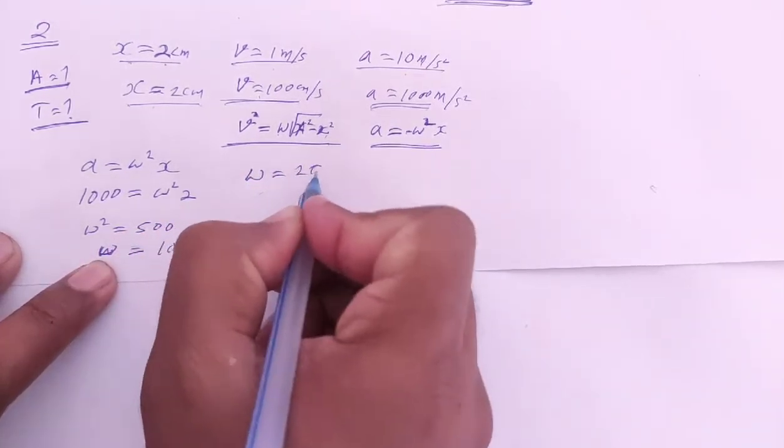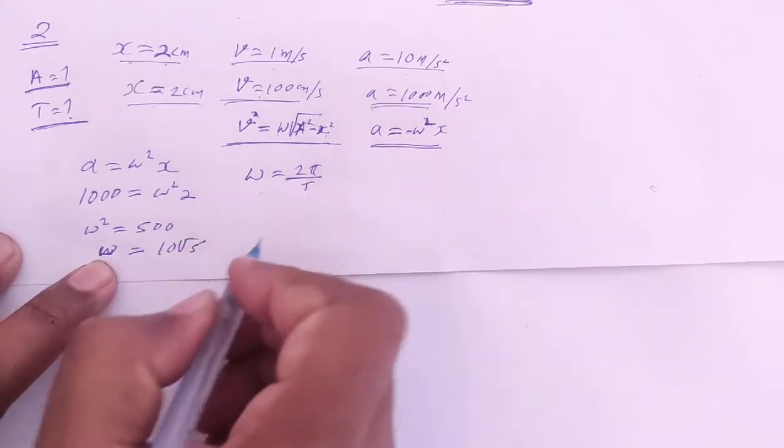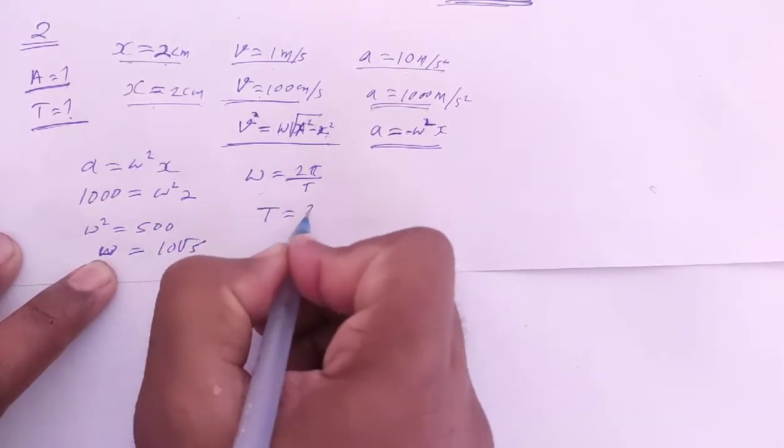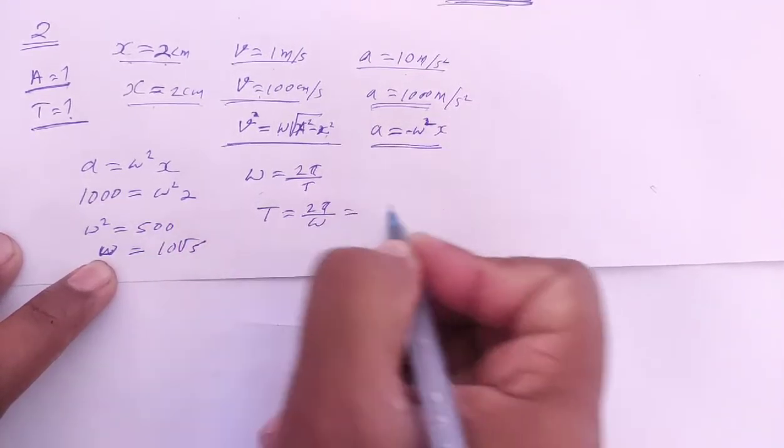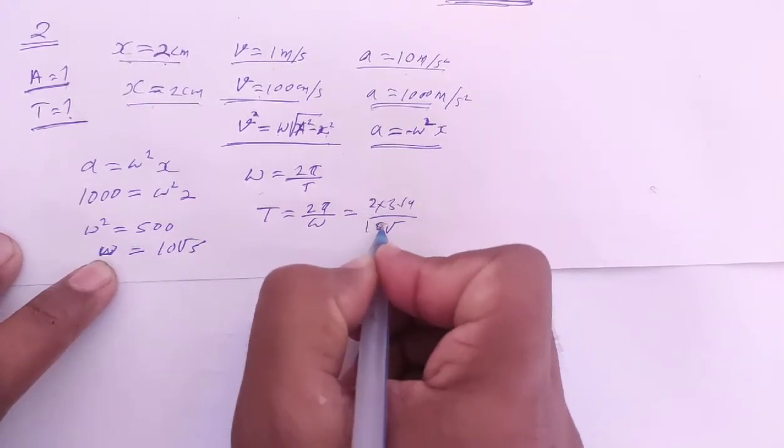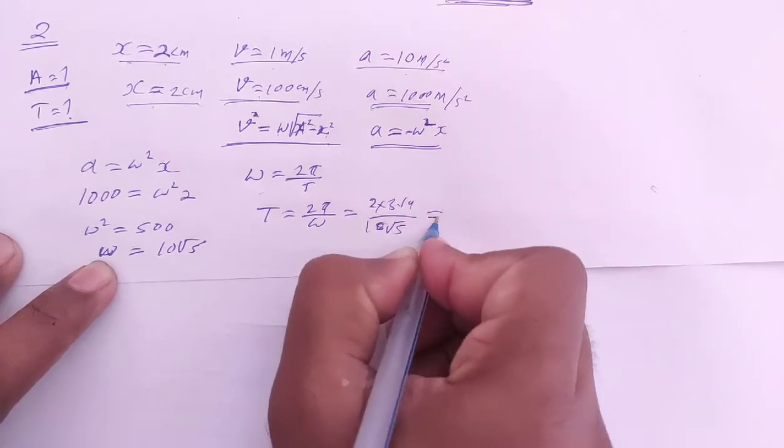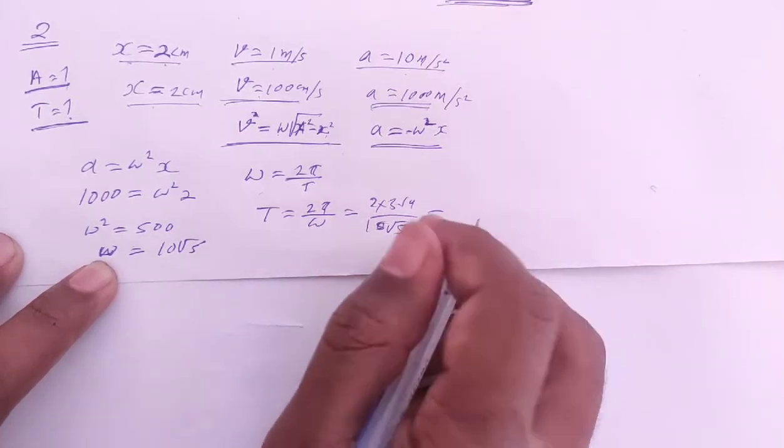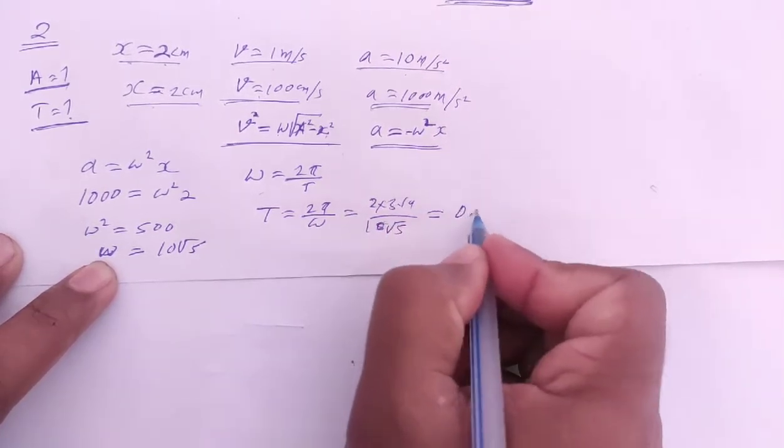Omega equals 2π/T, so T = 2π/ω. That's 2 × 3.14 divided by 10√5, which equals 0.28 seconds. This is the time period.